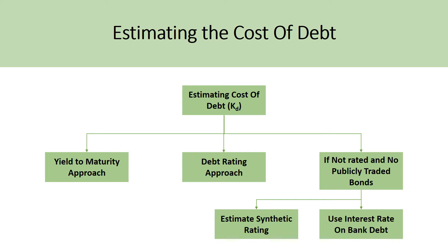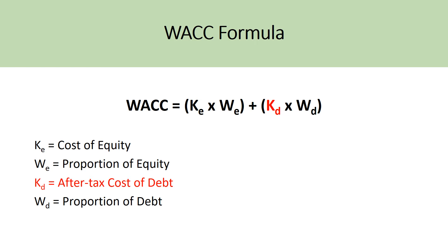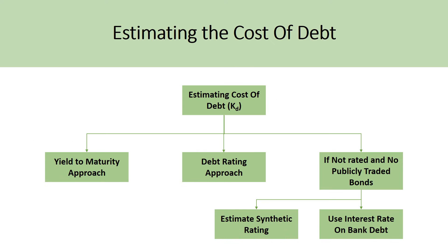Bank debt is not publicly traded, so the market value of that bank debt is not available and does not change. But when we're looking at the weighted average cost of capital formula, these weighted averages are the market value of equity and the market value of debt relative to the market value of total capital, which changes based on economic conditions. So the fourth option — using bank debt interest rate — is actually the most inaccurate option when it comes to estimating the cost of debt.